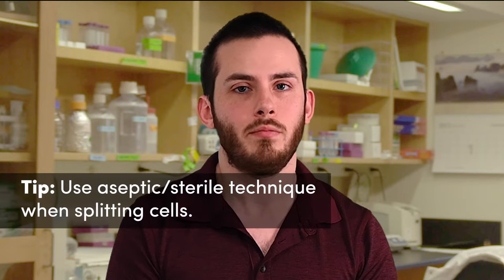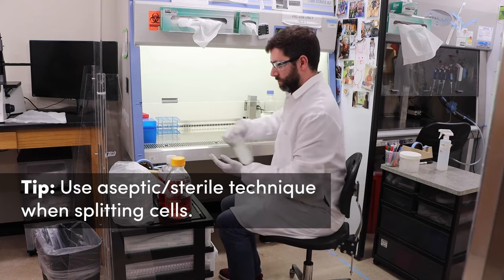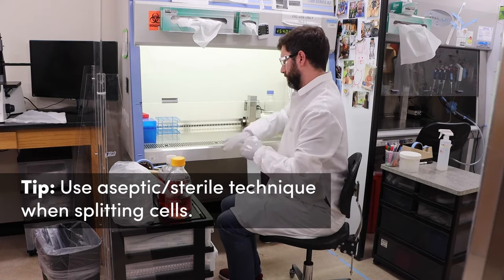Splitting cells is also known as subculturing or passaging. Regularly splitting cells will help to keep your cells healthy, and in turn can give your experiments the best chance of succeeding. Our first essential tip is a basic reminder to always use sterile technique to avoid contamination when splitting or feeding your cells.